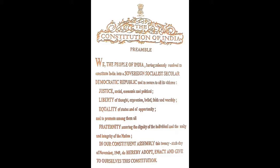The Constitution of India Preamble: We the people of India, having solemnly resolved to constitute India into a sovereign socialist secular democratic Republic, and to secure to all its citizens justice — social, economic and political — liberty of thought, expression, belief, faith and worship, equality of status and of opportunity, and to promote among them all fraternity assuring the dignity of the individual and the unity and integrity of the nation. In our Constituent Assembly this 26th day of November 1949, do hereby adopt, enact and give to ourselves this Constitution.